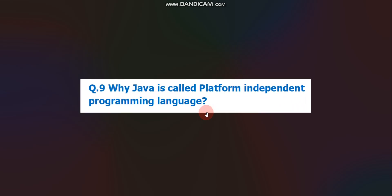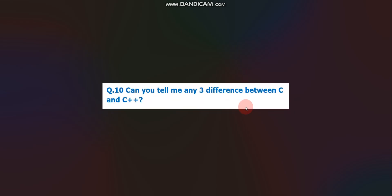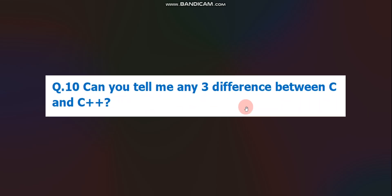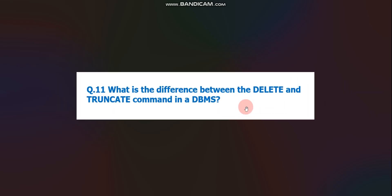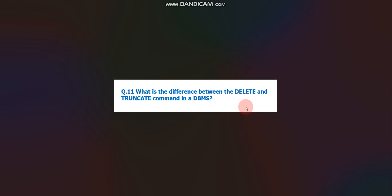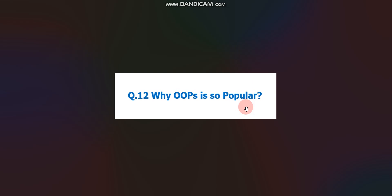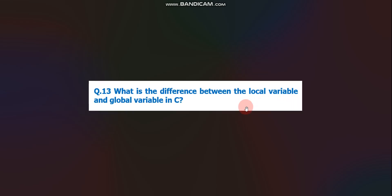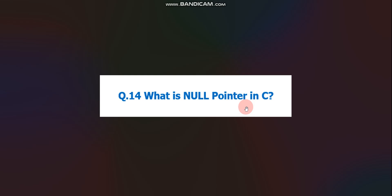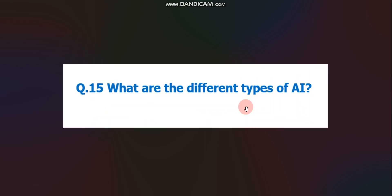Question number nine: why is Java called a platform-independent programming language? Question number ten: can you tell me three differences between C and C++? Question number eleven: what is the difference between the DELETE and TRUNCATE command in DBMS? Question number twelve: why is OOP so popular? Question number thirteen: what is the difference between a local variable and a global variable in C? Question number fourteen: what is a null pointer in C? Question number fifteen: what are the different types of AI? These are the common technical interview questions asked from many candidates.